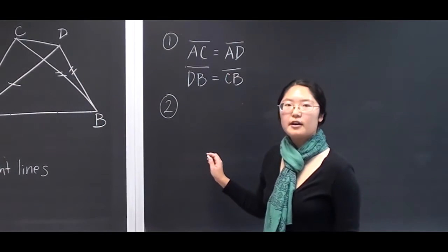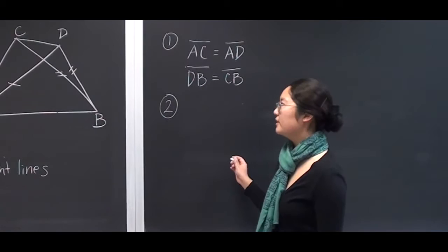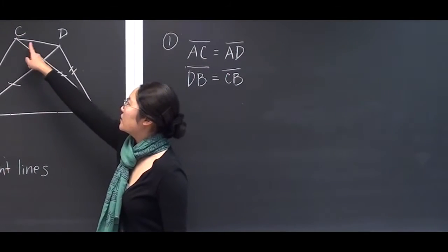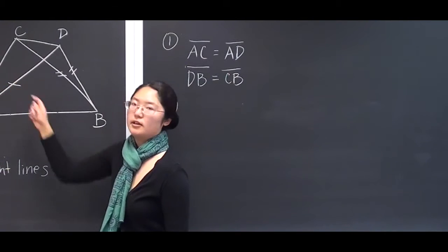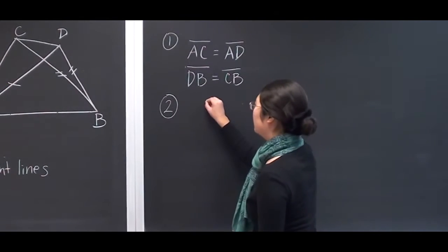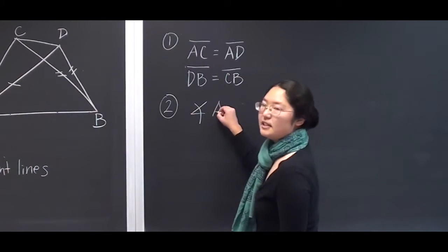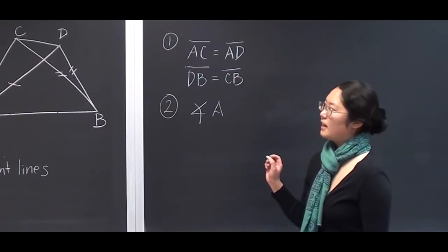Now, because of Prop 5 of Book 1, we can say that the angles subtending equal sides are also equal. Therefore, angle ADC is equal to angle DCA.